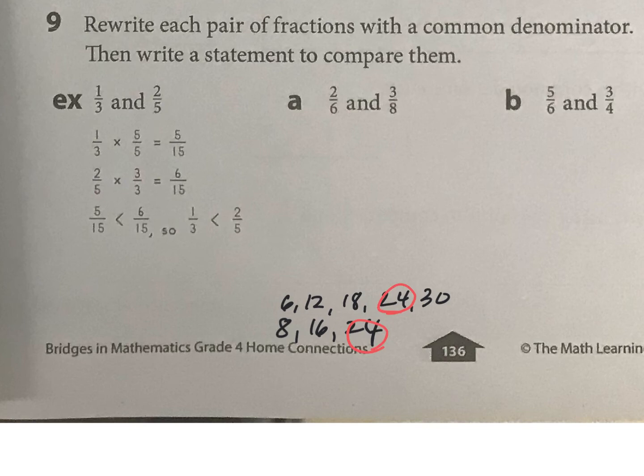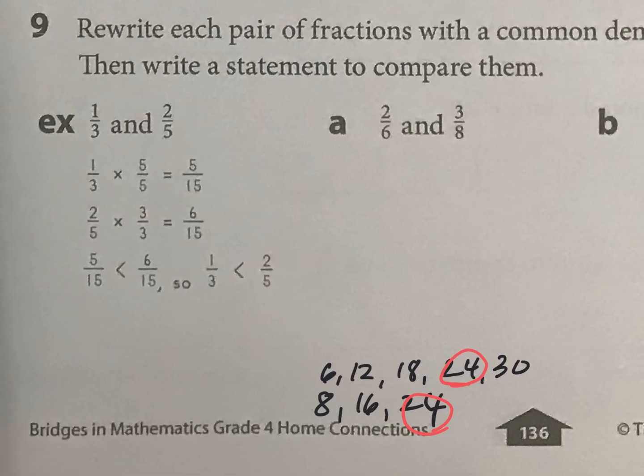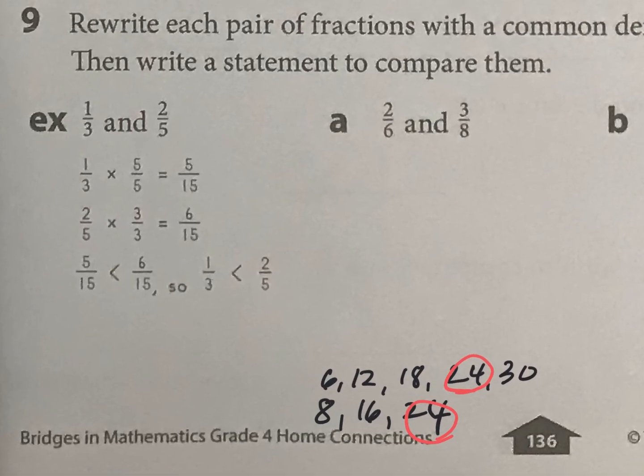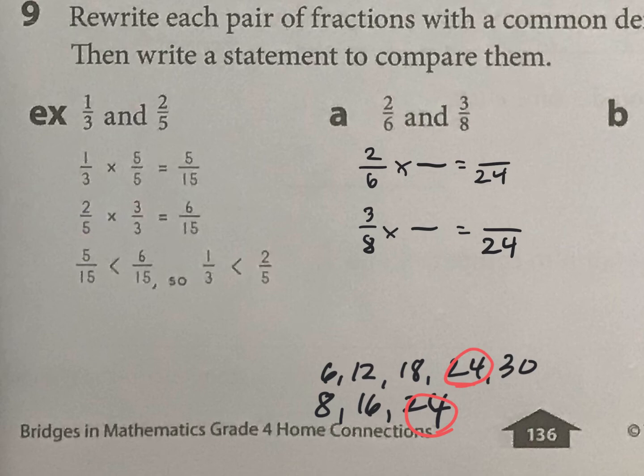So let me zoom in here, and using twenty-four, I'll follow this pattern. Okay, so let's go through this one together. So two-sixths times what is going to get us into twenty-fourths? Well, six times four is twenty-four, so that makes eight twenty-fourths. And here we have eights into twenty-fourths. So I'm going to cut those eights into three pieces, because eight times three is twenty-four, and that gives me nine twenty-fourths.